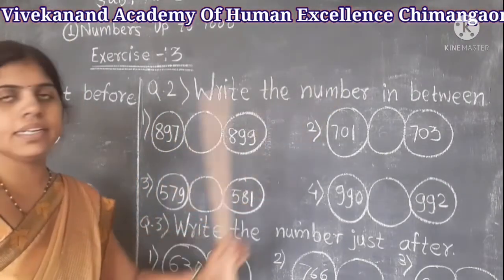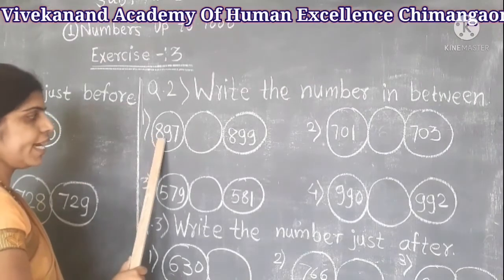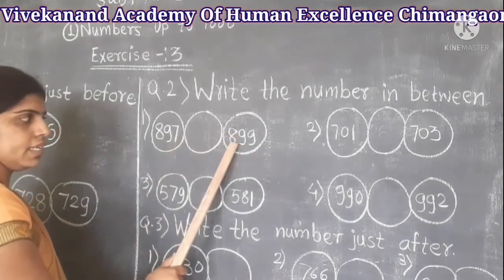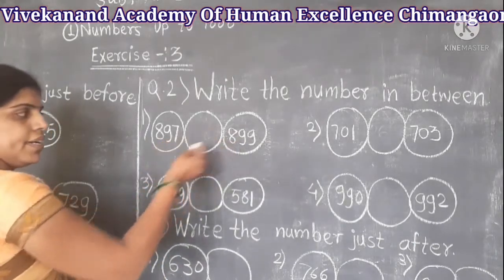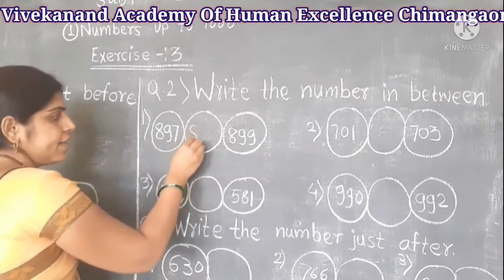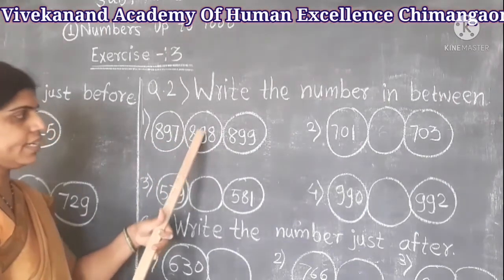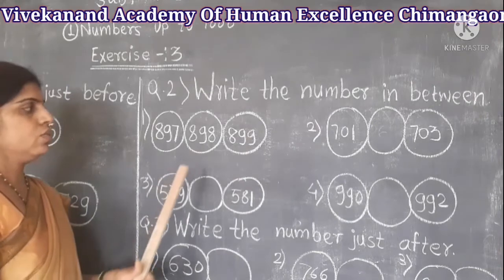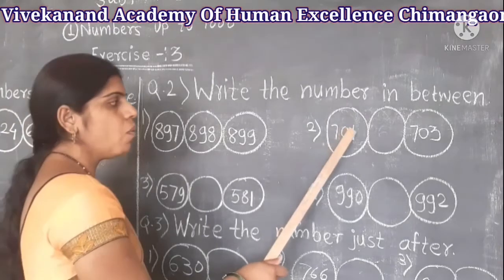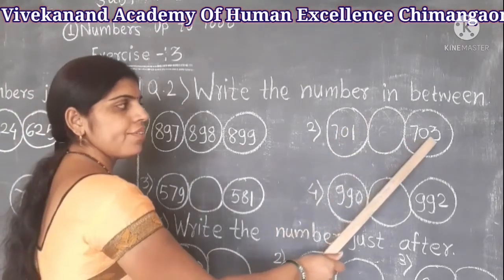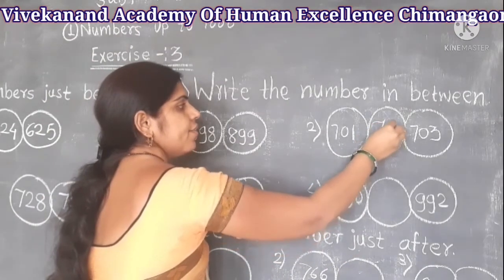Second question: write the number in between. First example: we have 897 and 899 — so 897, 898, 899 — and 898 is the between number. Second example: 701 and 703, so the between number is 702.